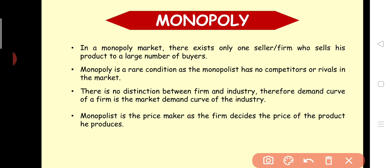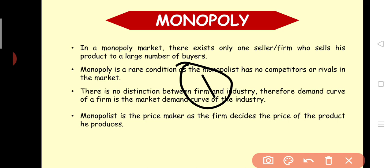So here we are going to cover Monopoly. There is no distinction between the firm and the industry. Therefore, the demand curve of the firm is the market demand of the industry — meaning one seller. The monopoly is the price maker.